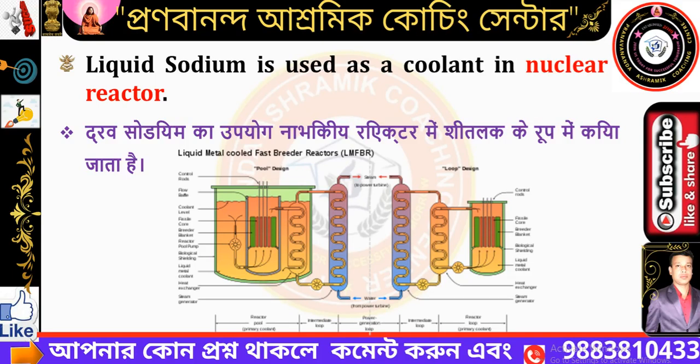Liquid sodium is used as a coolant in a nuclear reactor. The liquid sodium is used along with graphite and heavy water. If the moderator used is graphite, the neutron is moderated by graphite. The neutron interacts with neutron stars at very high energy, leading to a chain reaction.